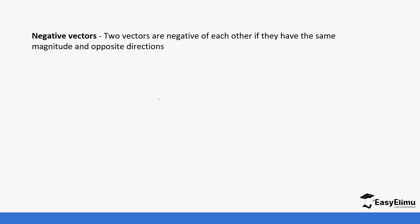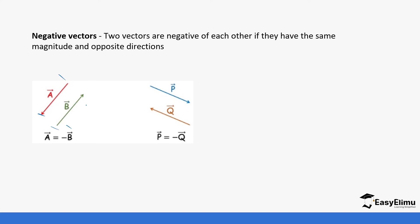Negative vectors can be the same size but the only difference is their direction is opposite. So we cannot say they are equal — they are opposite. When you look at vectors A and B, their size is the same but the direction is opposite; A moves in the opposite direction to B. So we say they are negative vectors. Similarly, vectors P and Q have the same size but opposite directions, so we say P and Q are opposite vectors of each other.